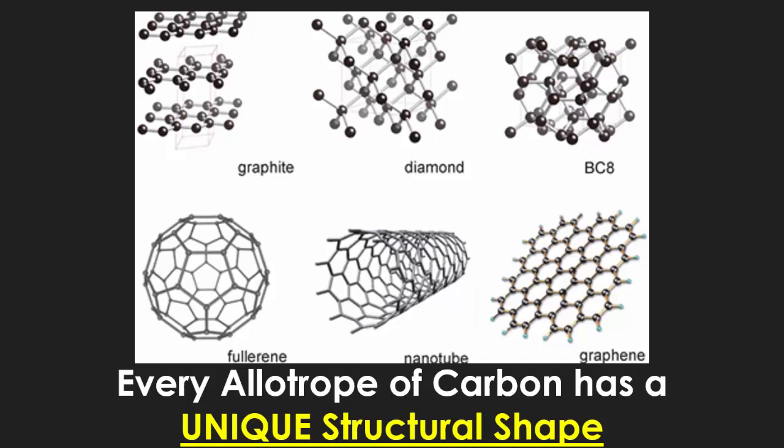Every allotrope of carbon has a unique structural shape. Graphite is in thin layers on top of each other, which is why it breaks off very easily on paper. Diamonds have a very complex structure, which is why they're such a strong, hard mineral. Light will not pass through graphite because the sheets block all the photons. But because of the unique structure of a diamond, light actually gets trapped inside the crystals, exciting those electrons to give the diamond a brilliant shine or rainbow effect.